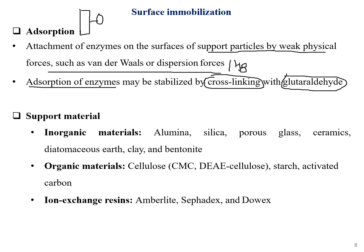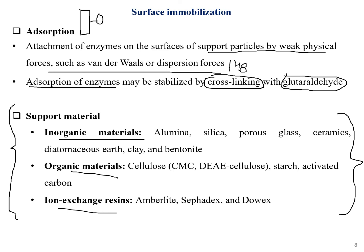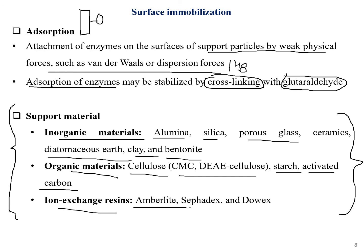Glutaraldehyde helps form cross-linking chains with enzymes so they remain stable and can be attached to support particles easily under weak forces. Cross-linking agents are important so a cluster of enzymes can be attached together. Support materials can be inorganic — such as alumina, silica, porous glass, ceramics, clay, and bentonite — organic — such as cellulose, CMC, starch, and activated carbon — or ion exchange resins such as Amberlite, Sephadex, and Dowex.